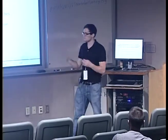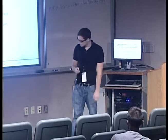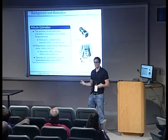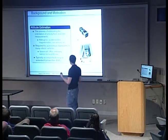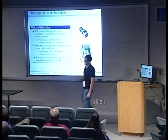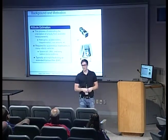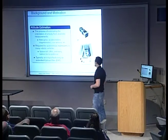To decode that title a little bit, we're looking at the effect of pendulation, or swinging motion, of a balloon-borne payload, and the effects of that motion on an attitude estimator. Attitude estimation is the process of estimating the orientation of a body from available measurements. On a vehicle, we have a multitude of sensors like a rate gyroscope, an accelerometer, a magnetometer, or a sun sensor.